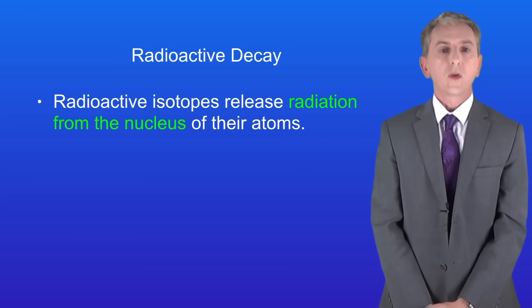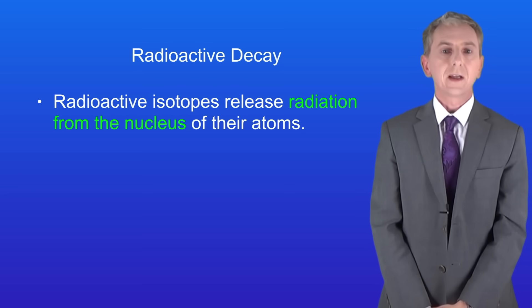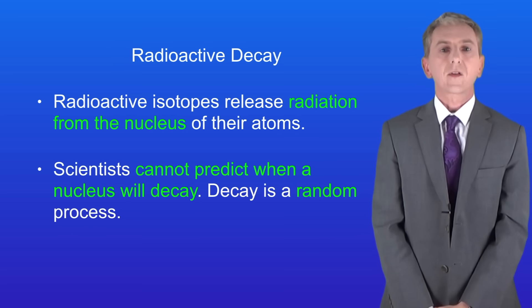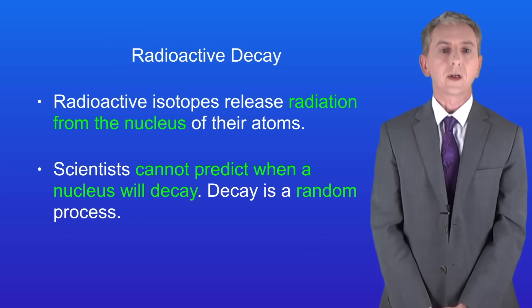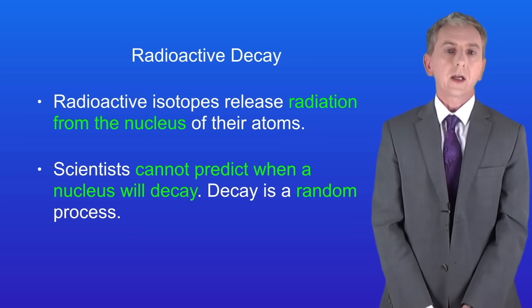Over the last few videos we've been looking at radioactive decay. We saw that radioactive isotopes release radiation from the nucleus of their atoms. Remember that scientists cannot predict when a nucleus will decay because decay is a random process. In this video we're looking at the idea of half-life, so let's get started.